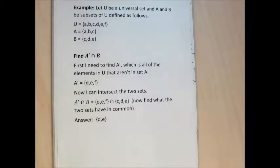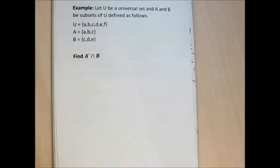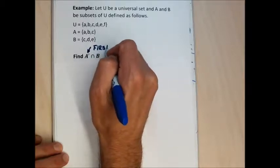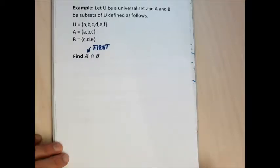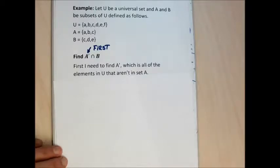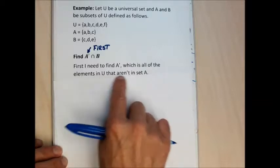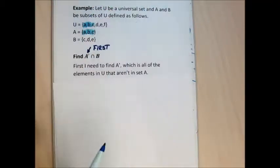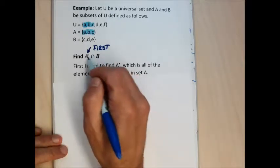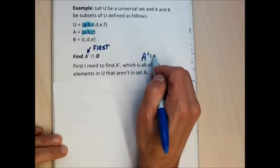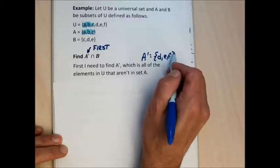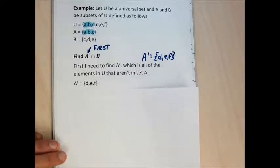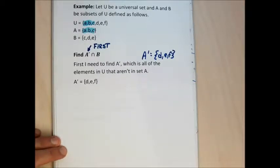I'm going to find A complement intersection B. Anytime there's a complement, you have to do it first. Complements are done absolutely first in the order of operations. The first thing I need to find is what A complement is — all elements in the universal set not in set A. Set A is {A, B, C}, so marking those in the universal set, what's unmarked is A complement: the set containing D, E, and F.